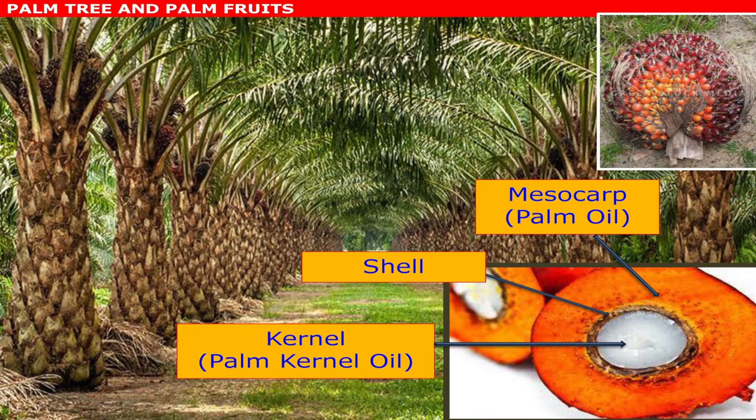Once we harvest that, we send it to a mill to separate the fruit from the bunches. This is the diagonal cut of the fruit. If you look at the outer layer, this is called mesocarp, and we're getting palm oil from the outer layer.